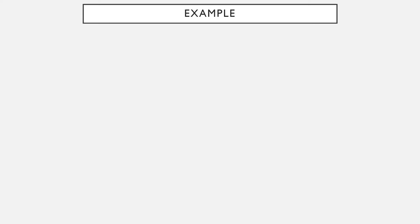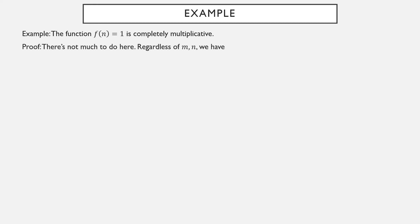Here's an example: f(n) = 1. This is a completely multiplicative function. For any two positive integers, f(mn) = 1 because f of anything is one. One is certainly equal to one times one, and f(m) = 1 and f(n) = 1. So f(n) = 1 is completely multiplicative.